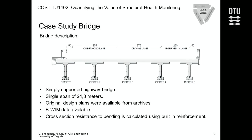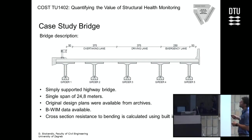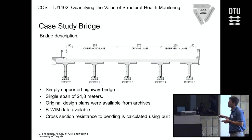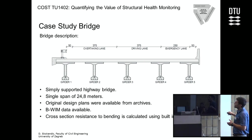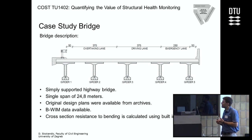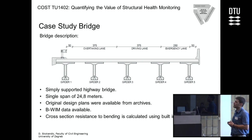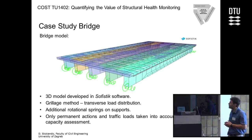The case study bridge is located in Slovenia. It is a simply supported highway bridge with a single span of 24.8 meters. Its superstructure consists of five pre-stressed, pre-fabricated girders with a concrete deck above. Being a highway bridge, it has an emergency lane, a driving lane, and an overtaking lane. We chose this bridge because we have sufficient bridge weight-in-motion data to develop a real traffic load model, and we had original design plans from the archives containing reinforcement and pre-stressing designs to calculate resistance to bending moment and shear force.